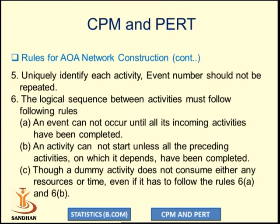Each activity must be uniquely identified and event numbers should not be repeated. The logical sequence between activities must follow these rules: an activity cannot occur until all its incoming activities have been completed, and an activity cannot start unless all preceding activities on which it depends have been completed. Even a dummy activity, which consumes no resource or time, must follow these precedence rules. This rule number six for precedence relationship is the most important in drawing an AOA network diagram.